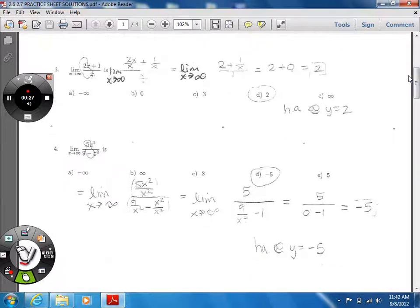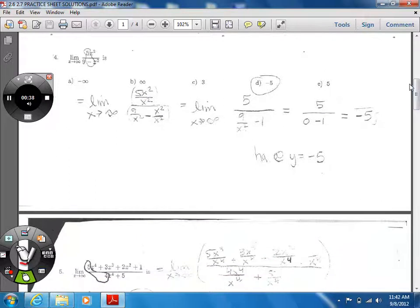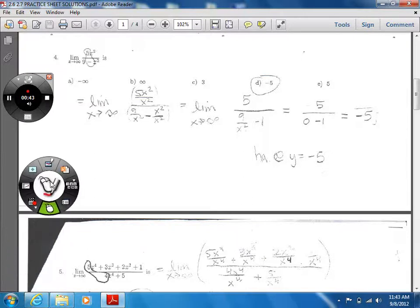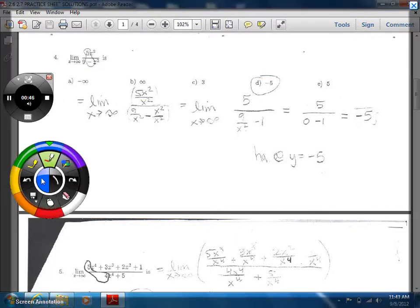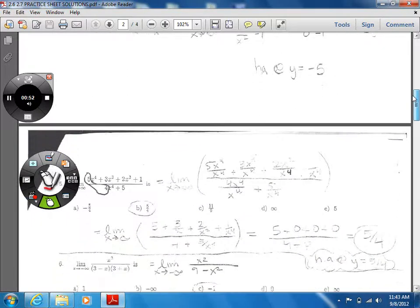Number three, we could do the shortcut, or we could divide by the highest power of x in the denominator. Either way, we'll get two. Number four, we could divide by the highest power of x in the denominator, which is x squared, or we can just do the shortcut, which you can see is five over negative one. So that'll get you negative five. And of course, that's your horizontal asymptote.